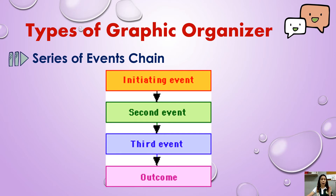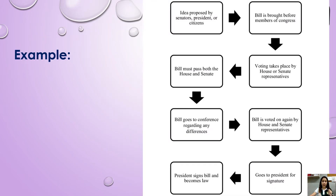This is a type of graphic organizer that describes the stages or steps in a process. The student must be able to identify the first step in the process and all of the resulting stages in the procedure as they unfold, and the outcome or the final stage. So we have the initiating event, second event, third event, and the outcome or final stage. Here is an example: how a bill becomes a law. You can see the series of events and the stages before they proceed to the final stage.